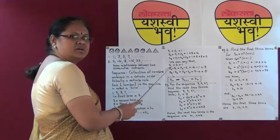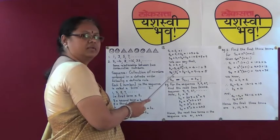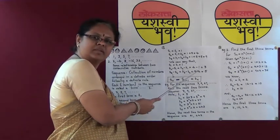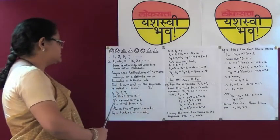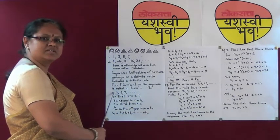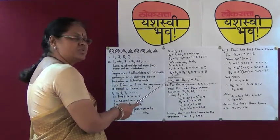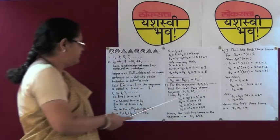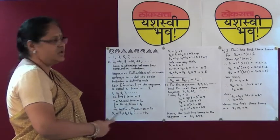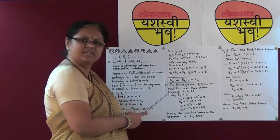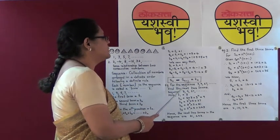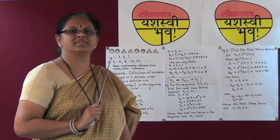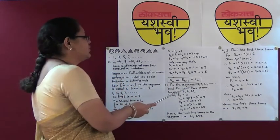Looking at these equations, we say the first term equals the sum of the first term, which is 1. S2 minus S1 gives t2, that is 4 minus 1, which is 3 — the second term of the sequence. S3 minus S2 gives t3, that is 9 minus 4, which is 5 — the third term. So in general, Sn minus Sn-1 is equal to tn. Learn this first formula: the sum of the first n terms minus the sum of the previous terms equals tn.